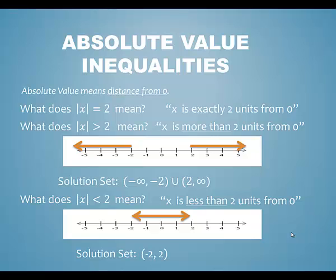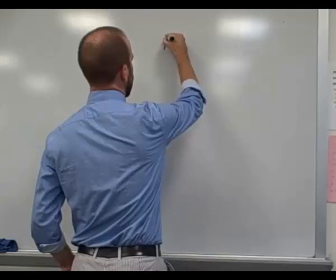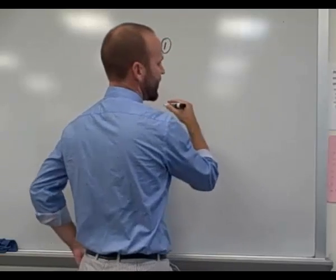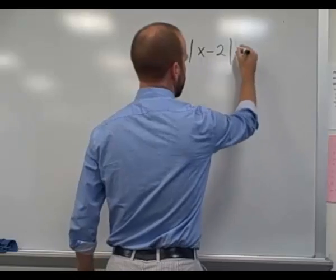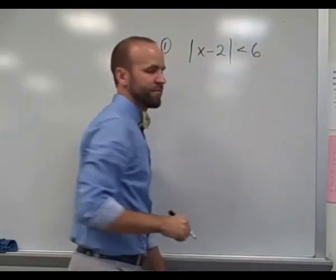We'll find that if our absolute value is greater than a positive number, our solution set will have two intervals. And if our absolute value is less than a positive number, our solution set will have only one interval. The first example we're going to look at is the absolute value of x minus 2 is less than 6.